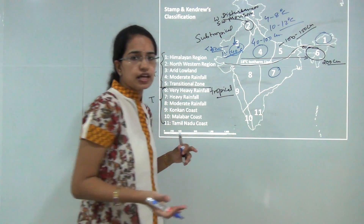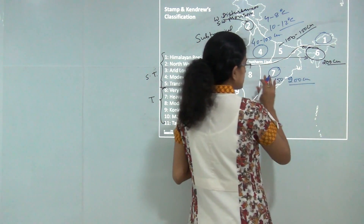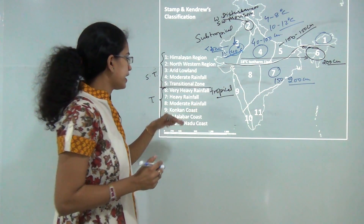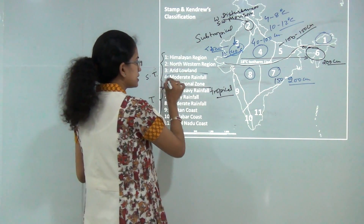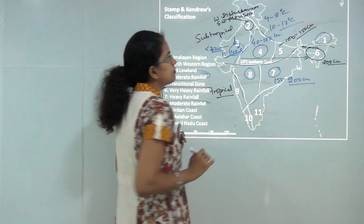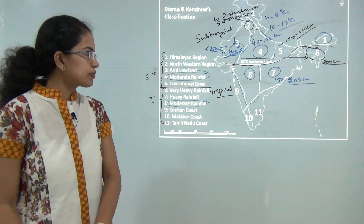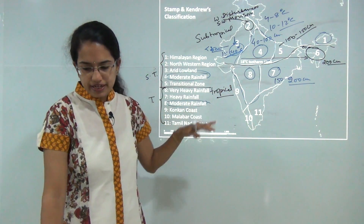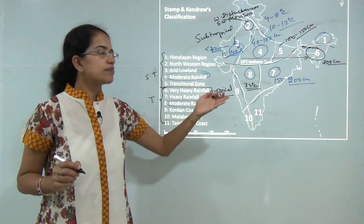Region 7 has heavy rainfall of 150 to 200 centimeters, covering parts of Odisha, Jharkhand, and northern Andhra Pradesh. Region 8 is moderate rainfall again — around 40 to 100 centimeters — similar to Region 4, but this lies in the tropical zone with comparatively higher temperature, spiking to 32 degrees Celsius in July and August and not falling below 18 degrees Celsius in summer months.